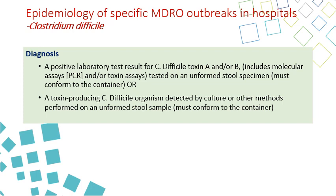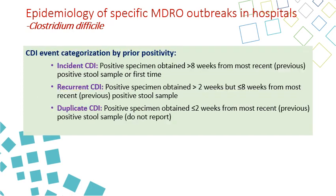Additionally, we can detect the organism itself — toxin-producing C. diff detected by culture or other methods — performed on unformed stool samples, meaning the patient has diarrhea and the stool takes the shape of the container. We do not test formed stool samples. Clostridium difficile infection can be categorized as incident — positive with no previous positive for more than two weeks — or recurrence, if there was a previous positive between two and eight weeks. If the patient had a positive test within the last two weeks, it is considered a duplicate CDI.